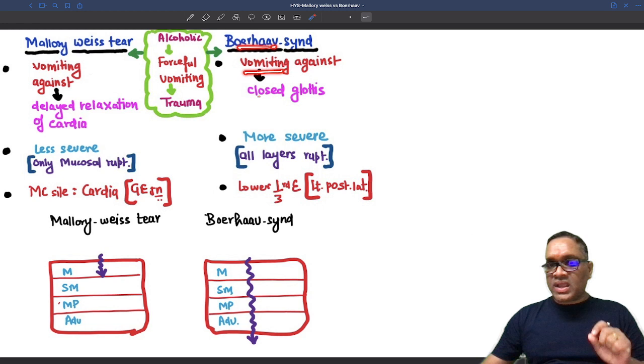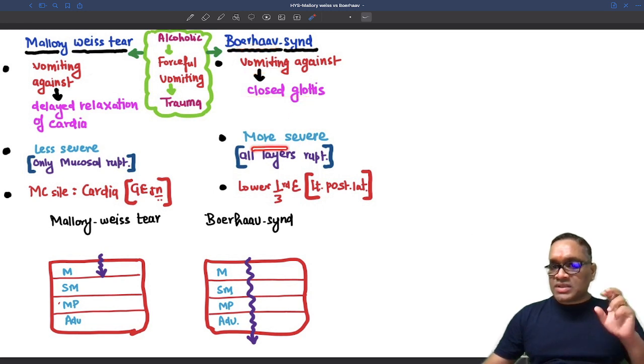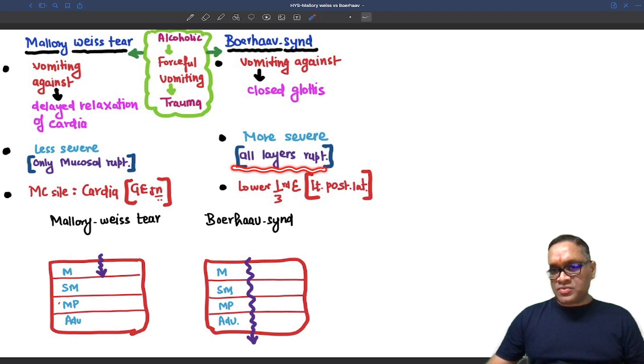Whereas Boerhaave syndrome is vomiting against the closed glottis. It is a more severe form and here all layers will be ruptured. Because of all layer rupture, they can lead to mediastinitis and other complications. So what is the most common site? Lower one third of the esophagus.